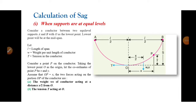Here we are considering three different cases. First, when supports are at equal levels. Second, when supports are at unequal levels. And third, the effect of wind and ice loading. First, let us calculate sag when supports are at equal levels.